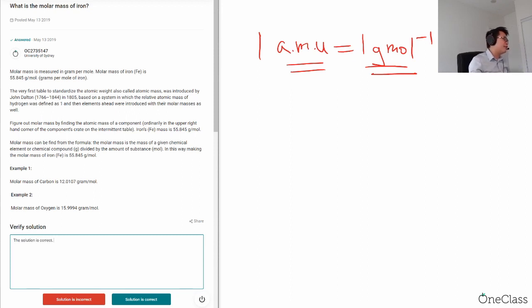So let's look at the second paragraph. The standardized atomic weight is called the atomic mass. Because at first we don't use gram per mole, we use atomic mass. And it is chosen by John Dalton in 1805. The system used relative atomic mass of hydrogen to be one and carbon to be 12.